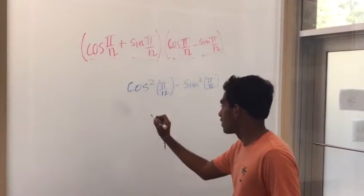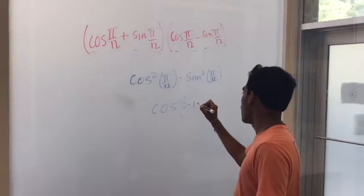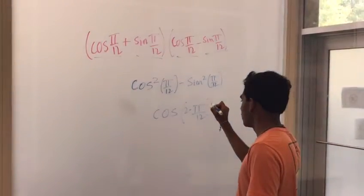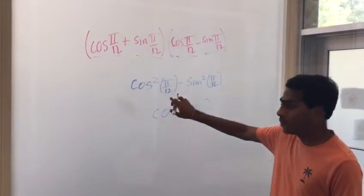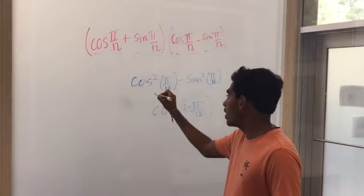Because this is going to be cos of 2 times π/12. Because this is a double angle identity of cos 2θ. So let's just list that out real quick.